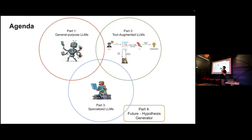The first part, I'll talk about general purpose LLMs like ChatGPT and Bard. Then, tool-augmented large language models — by tool, I mean search engines, Excel spreadsheets, things like that. Part three covers how we specialize these models into domains and tasks we care about. And finally, how we can use these models as hypothesis generators, and how they connect with specialized large language models.